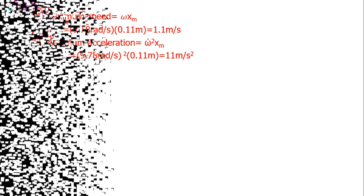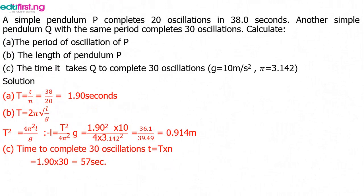The second question: a simple pendulum P oscillates. We are asked to calculate the period of oscillation, the length of pendulum P, and the time taken. The period equals time over number of oscillations — it oscillates 20 times in 38 seconds, so 38 divided by 20 gives 1.90 s. To find the length, from T equals 2 pi times the square root of L over g, rearranging gives L equals T squared over 4 pi squared times g, which equals 0.914 m.